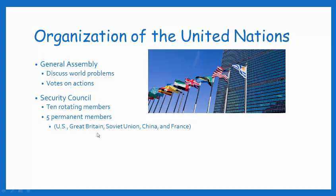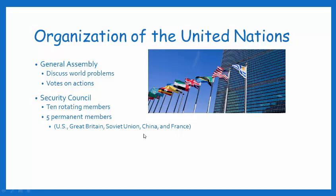The Security Council has 10 rotating members and five permanent members — a 15-member panel that votes on major world issues. The five permanent members, still the same today, are the United States, Great Britain, the Soviet Union, China, and France. The goal of the United Nations is to continue to maintain world peace and prevent another global war from happening. As America stayed active in the United Nations and took that leadership role, you'll see America really shift away from being isolated.